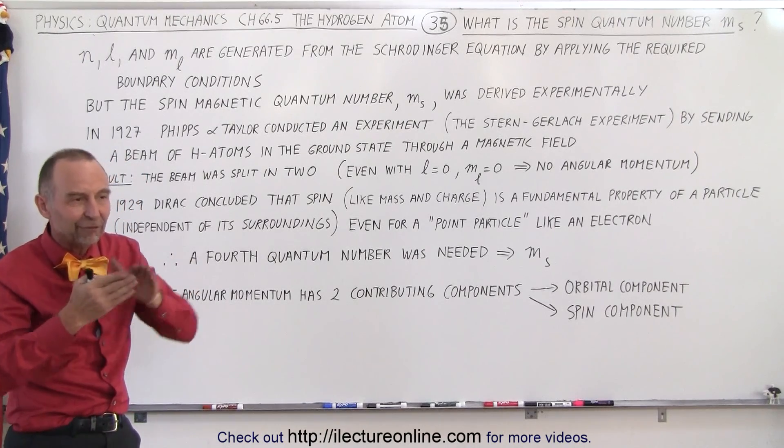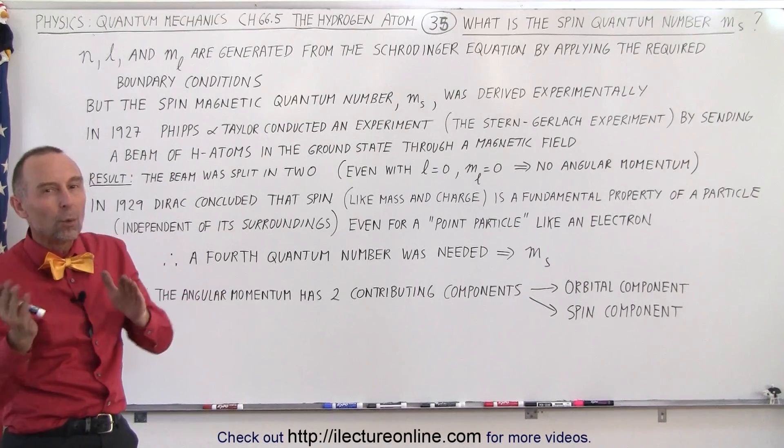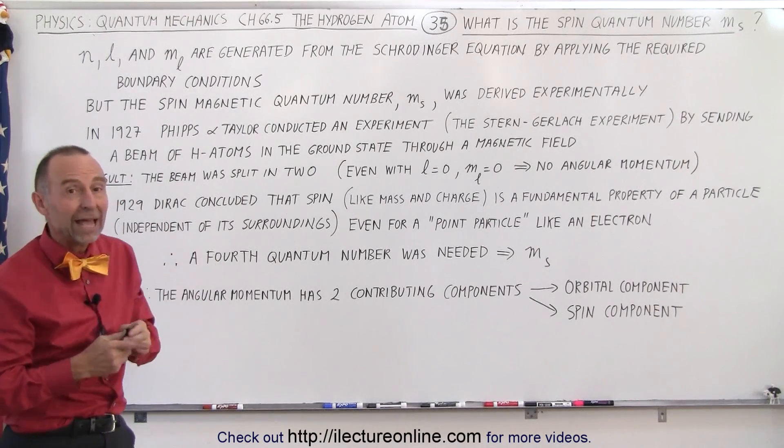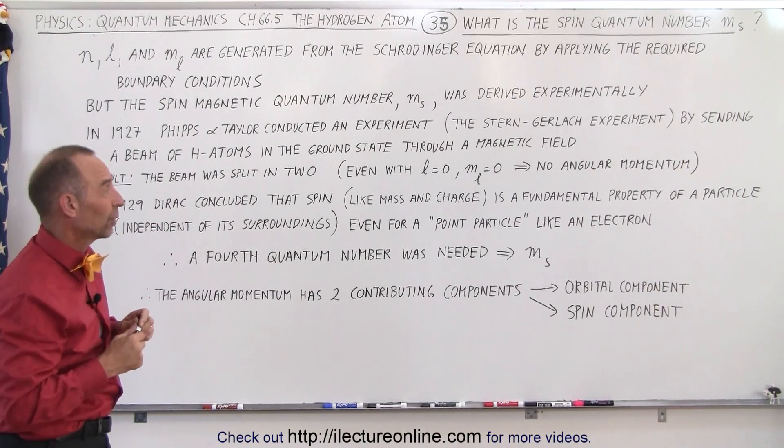when you send hydrogen atoms through a magnetic beam, they would then be deflected differently depending upon what orientation the angular momentum of those electrons would have.